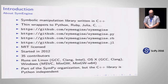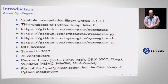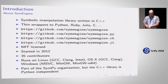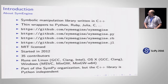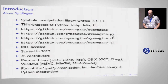SymEngine is written in C++ and has thin wrappers in many languages. We start with C and then have wrappers in Python, Ruby, Julia, and Haskell as well. The main repository is a pure C++ library, and then the .py, .rb, and .jl are Python, Ruby, and Julia wrappers. It's MIT licensed.